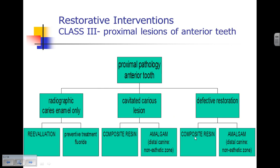How do we make decisions for a restorative intervention on a Class 3 proximal lesion? When talking about proximal pathology in anterior teeth, we refer to three distinct areas: the lesion seen radiographically in enamel only and not visible clinically; the lesion becoming cavitated where an explorer can drop into a hole in the tooth; and a previously restored tooth where the composite has become defective due to marginal gaps, discoloration, fracture of the restoration, or loss of retention. All of these can lead to need for replacement.